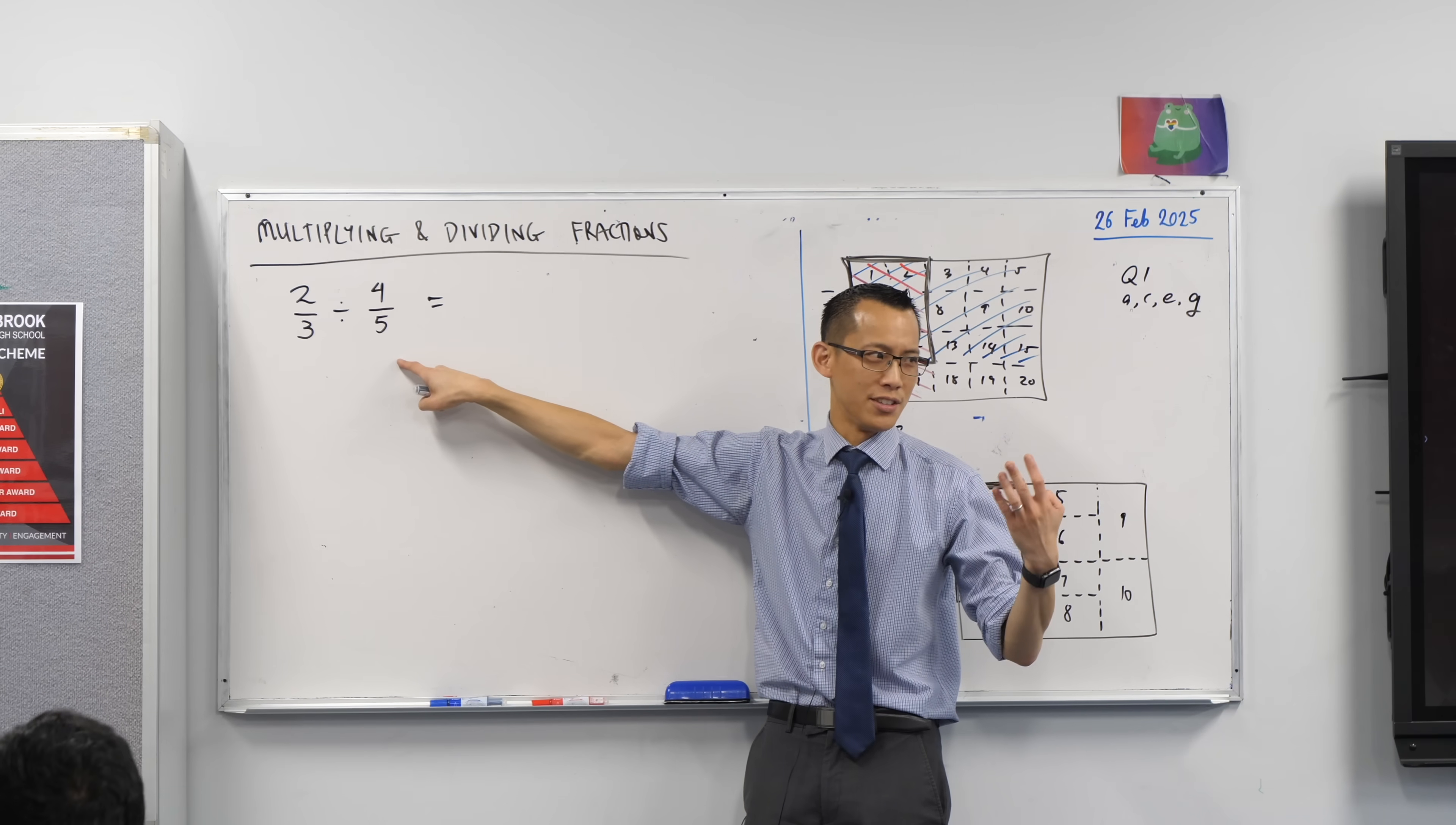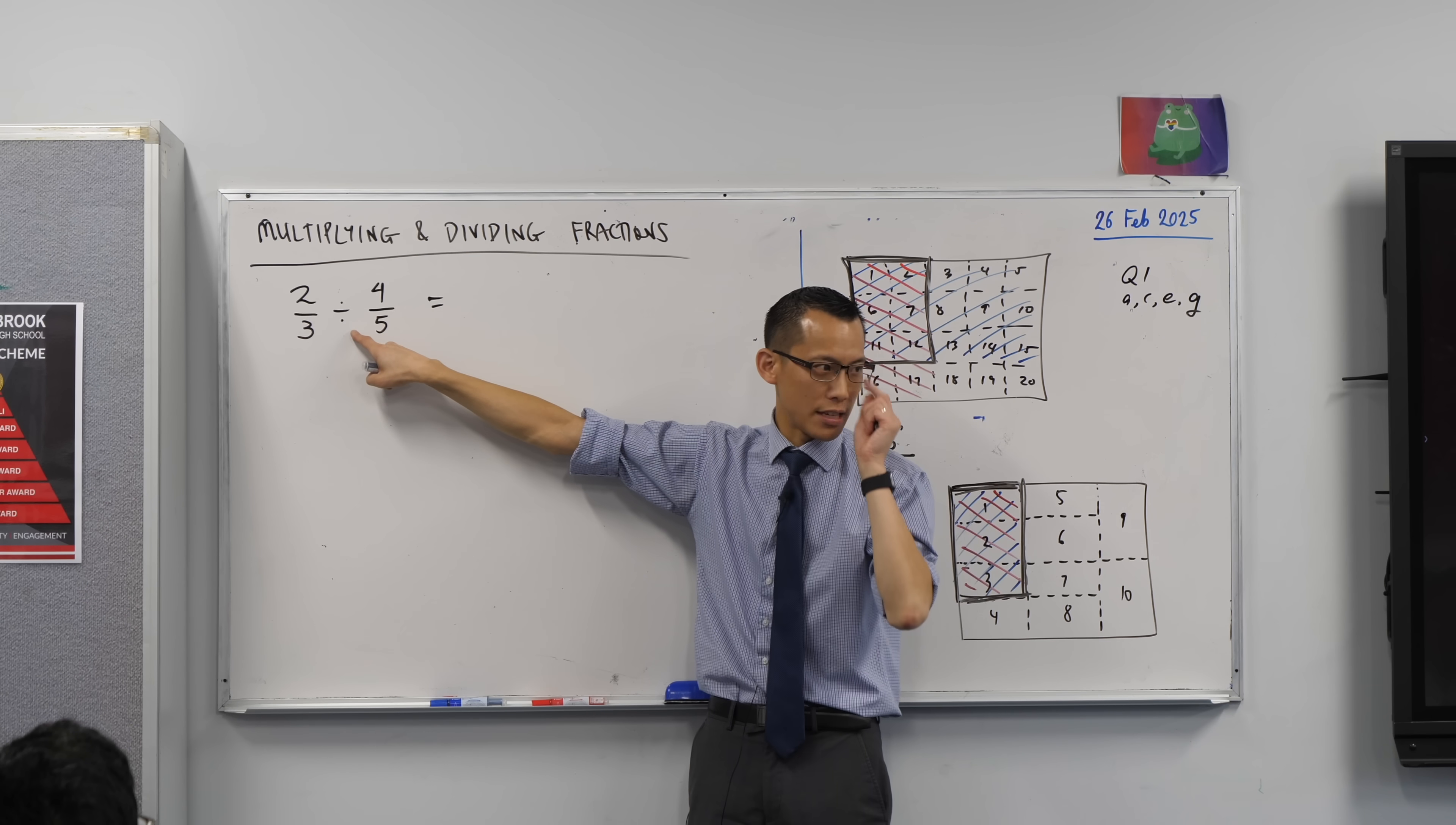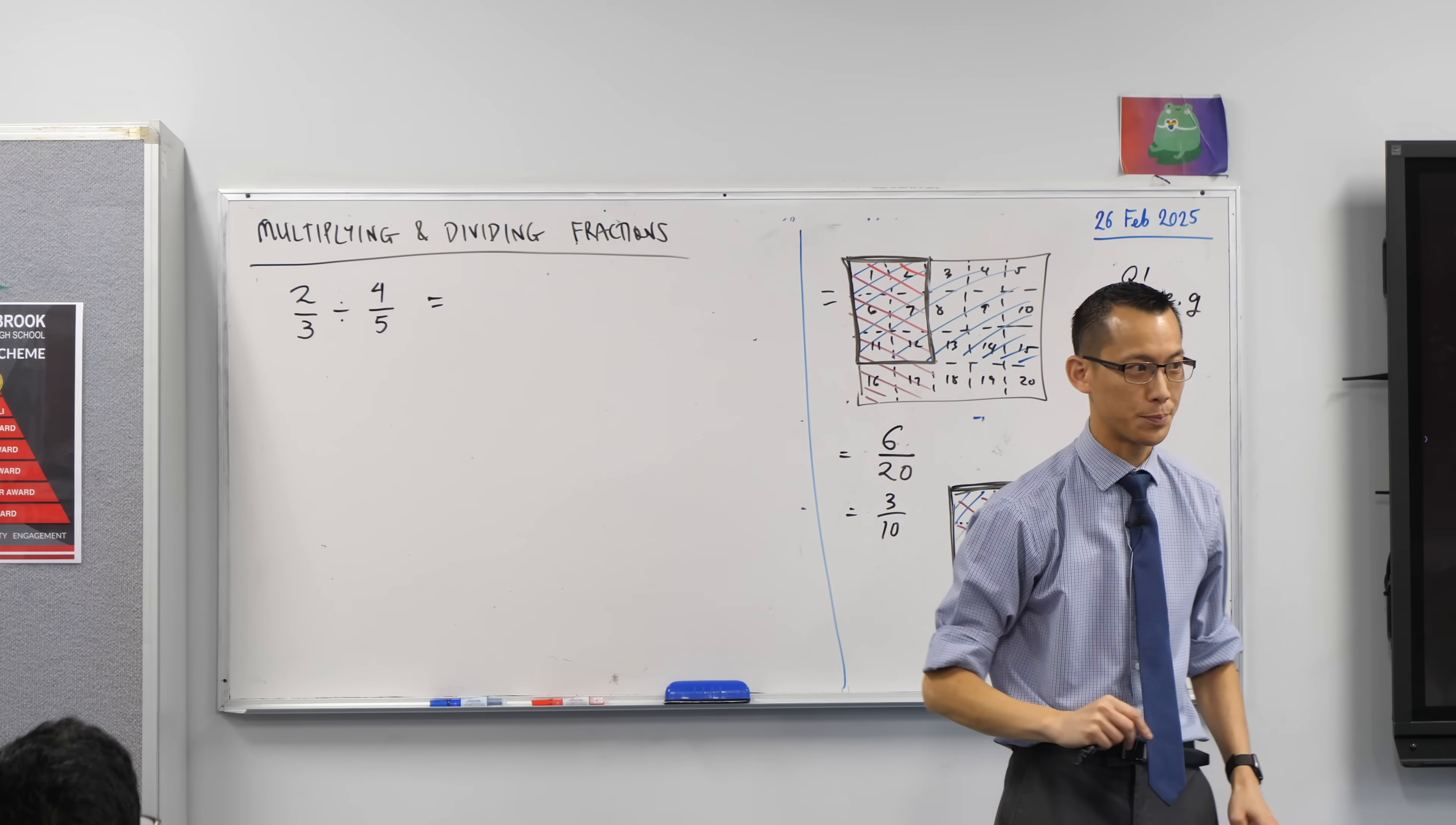Anyone learn it that way? I'm like a million years old, so no. That's okay. Keep this the same. You change this from division to multiplication and then you flip this upside down. You take the reciprocal.